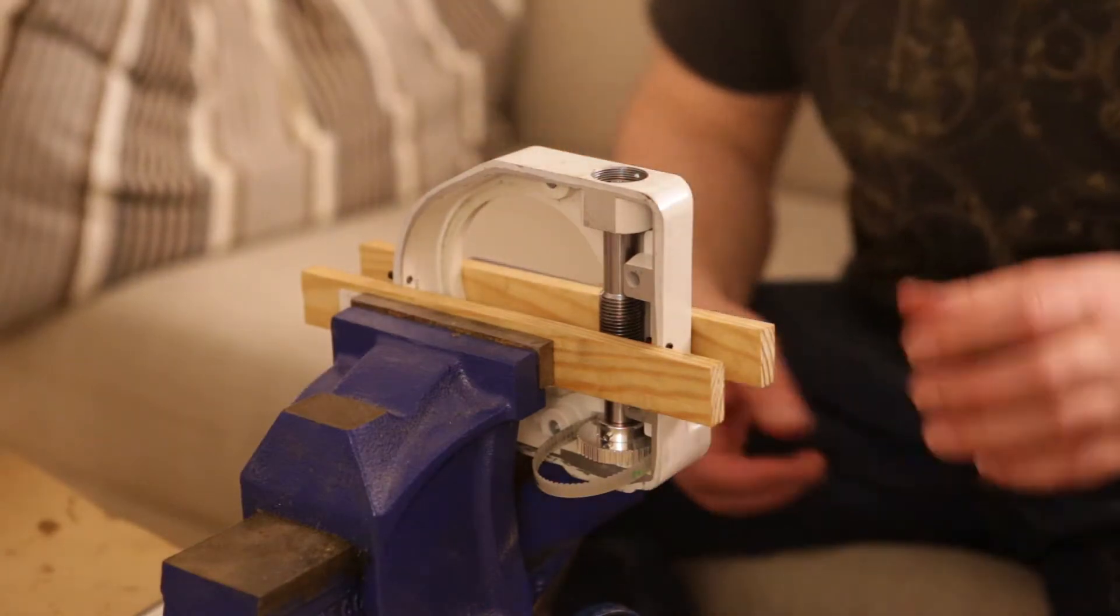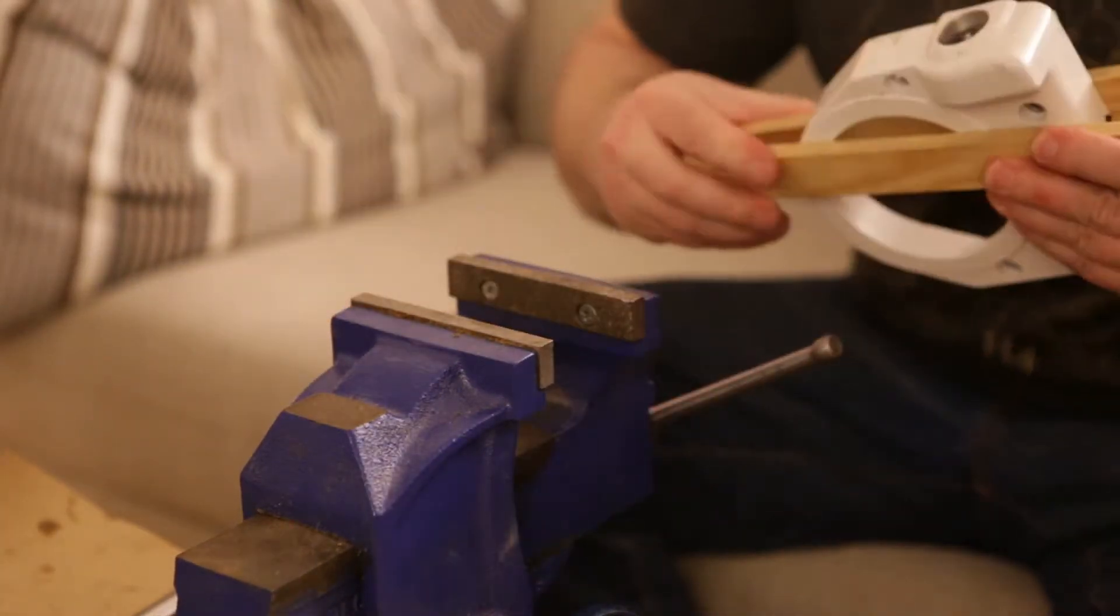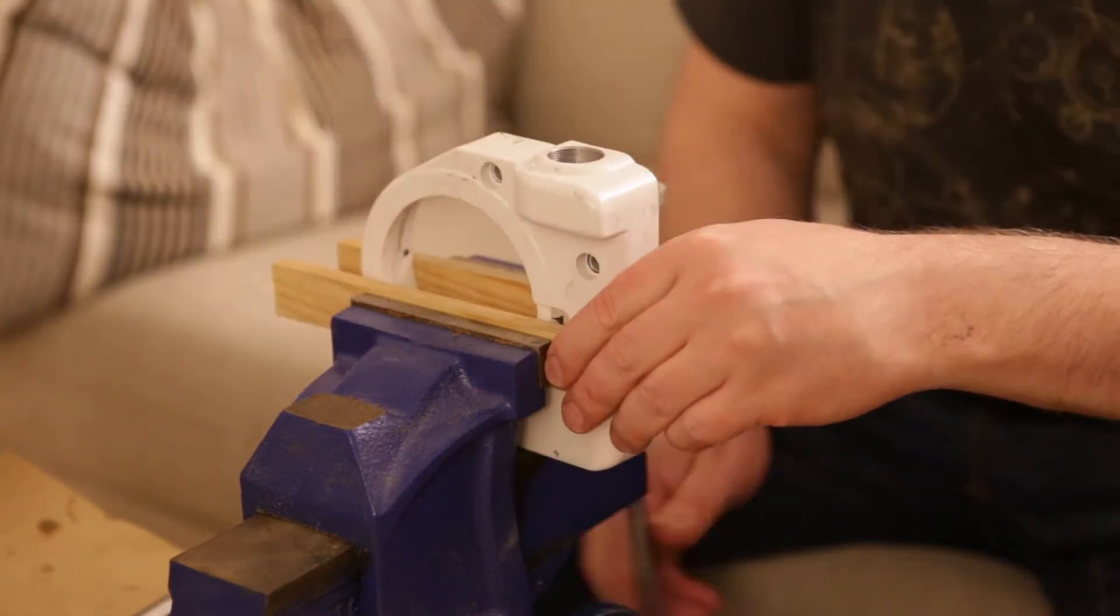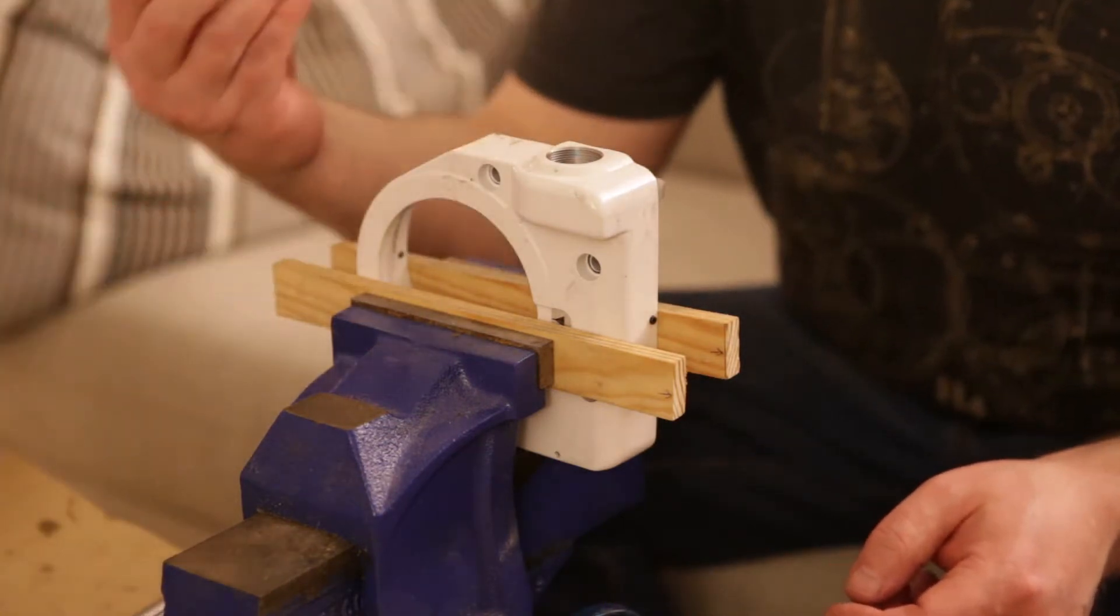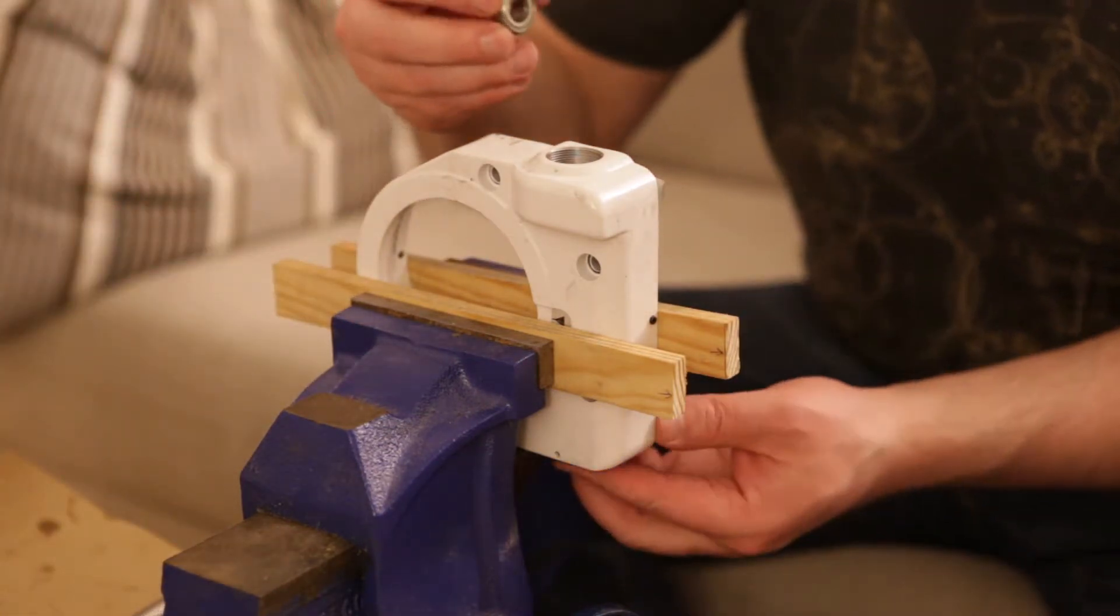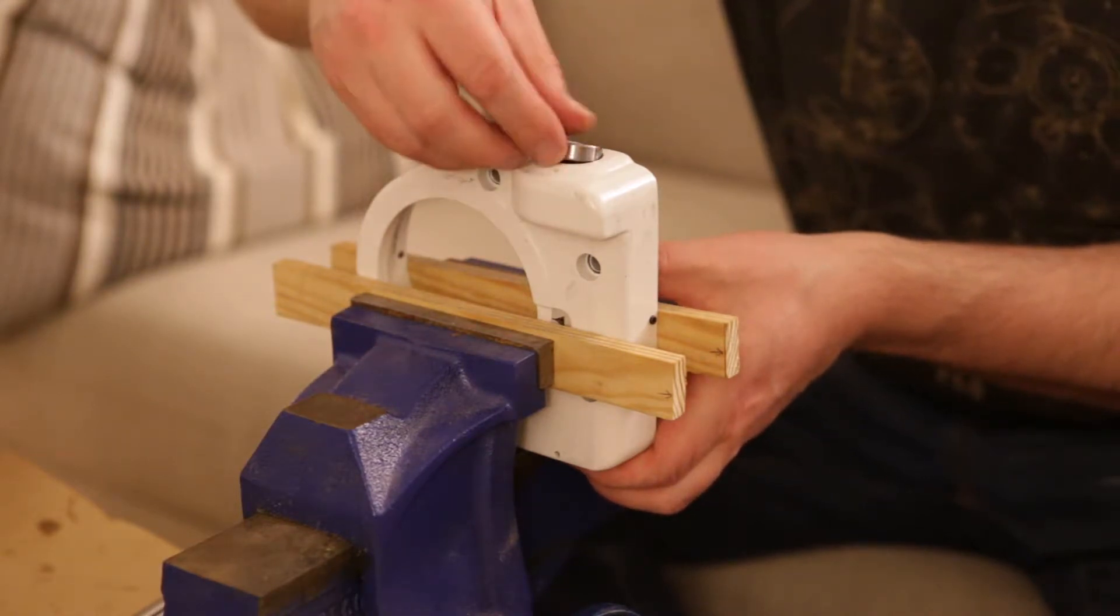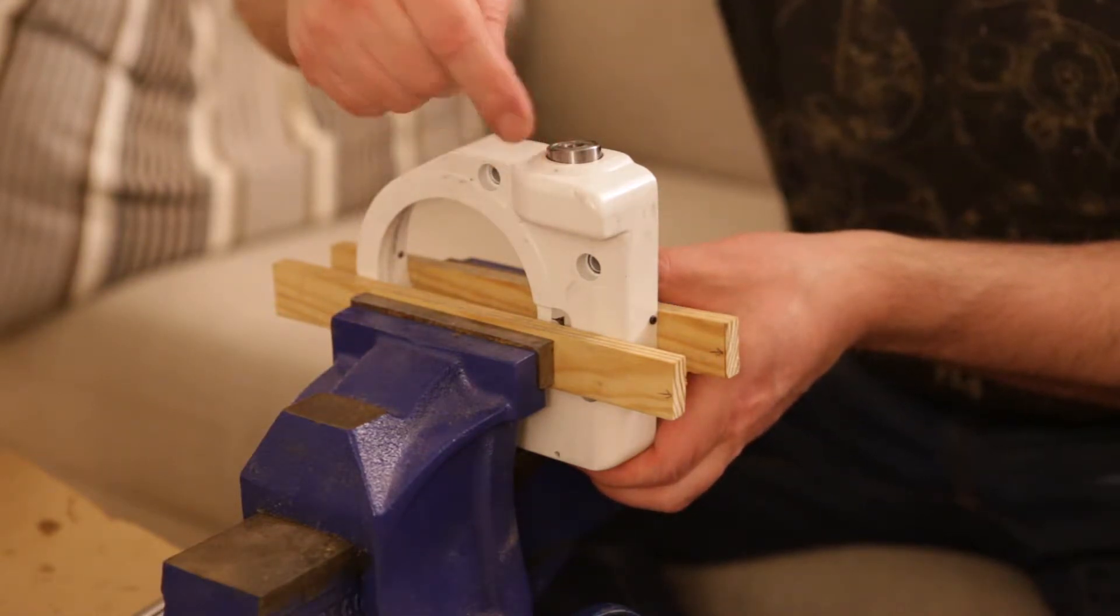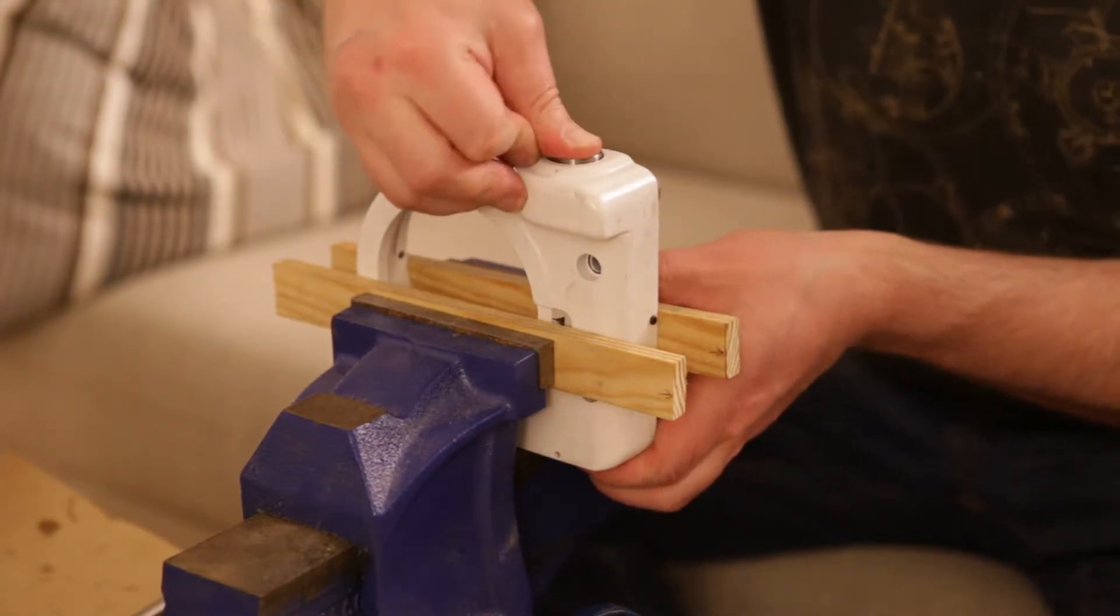The next thing I will do is to flip this thing over so that I can put the bearing back in. This is the pulley side. You have to put the pulley side bearing back in first.